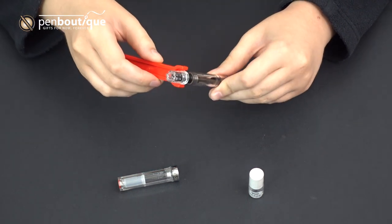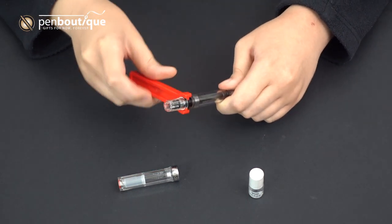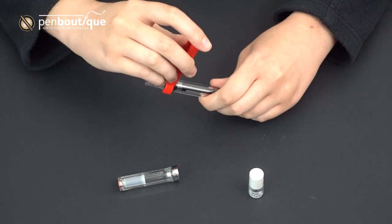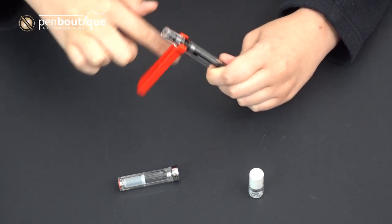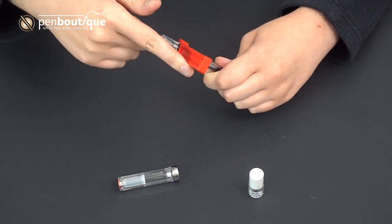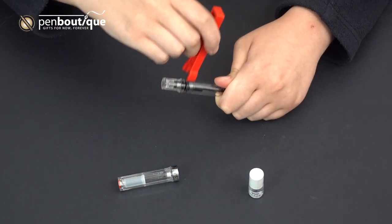And you want to make sure that you're using the wrench to twist it back because you don't want to get it into a position where you can't unscrew it again. So twist that counterclockwise until it's tight again.